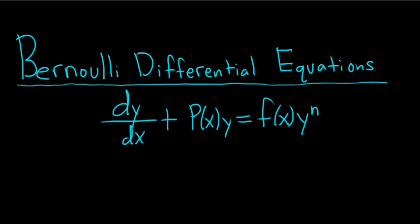This equation you see here on your screen is called Bernoulli's equation. So if n is equal to 0 or n is equal to 1, it ends up being a linear differential equation and we can solve it using the methods of solving linear differential equations. If n is 0 you get y to the 0 which is 1, so it's linear. If n is 1 you end up with a y on the right hand side, but you already have a y over here, so you end up subtracting and combining the y's and it's linear.